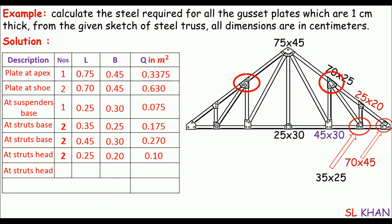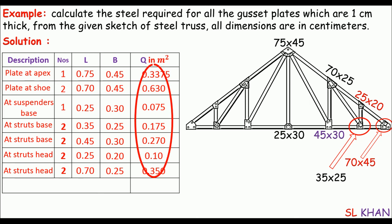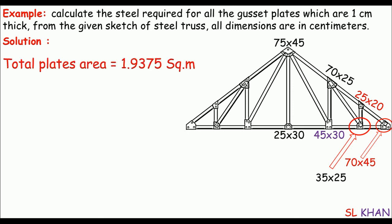The last type — also two plates — has a size of 70×25 centimeters, giving a quantity of 0.350 square meters. Adding all these values together gives the total quantity: 1.9375 square meters. So the total gusset plates area equals 1.9375 square meters.